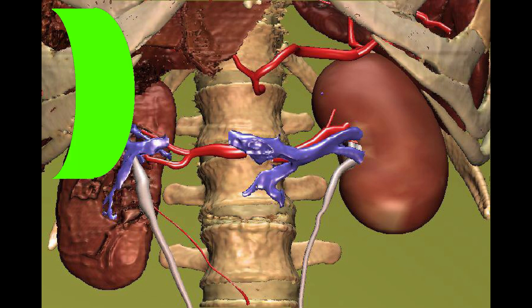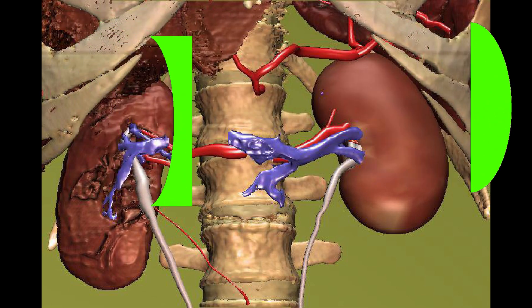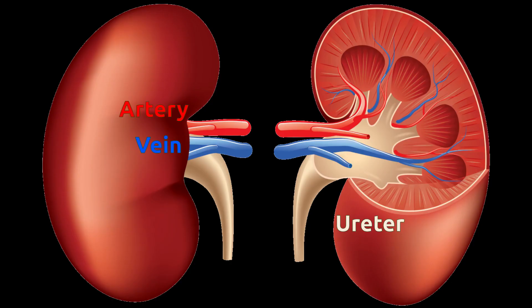The outer surface of the kidney is convex and the inner surface is concave. The concave side is called the hilum, and on the hilum there are openings for blood and urine flow.